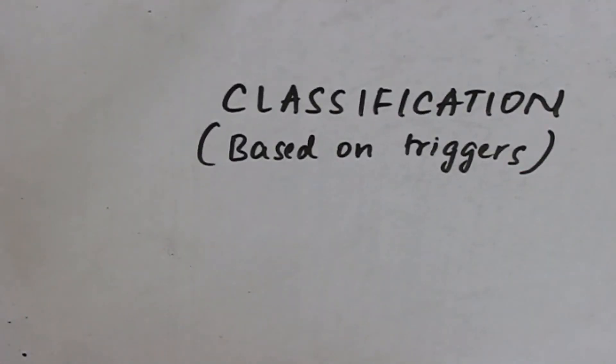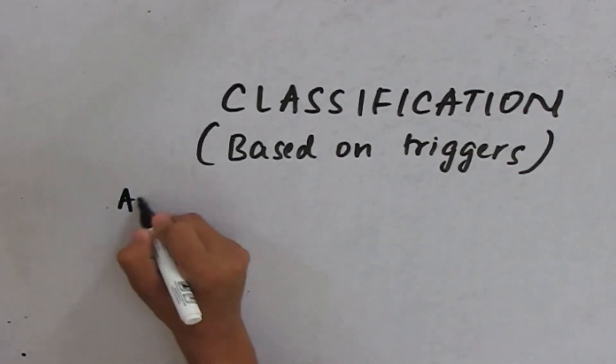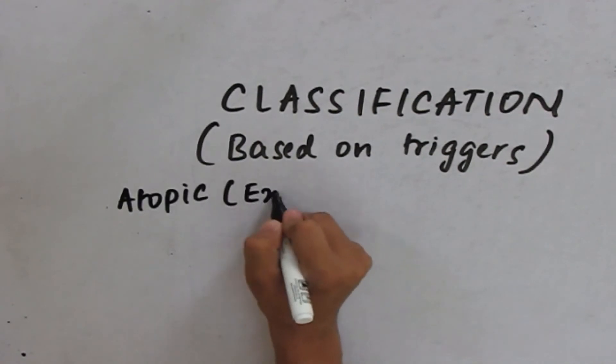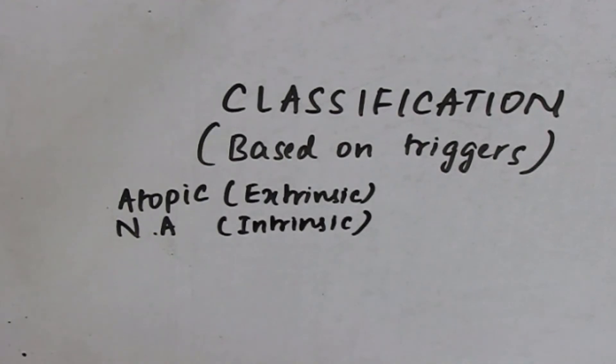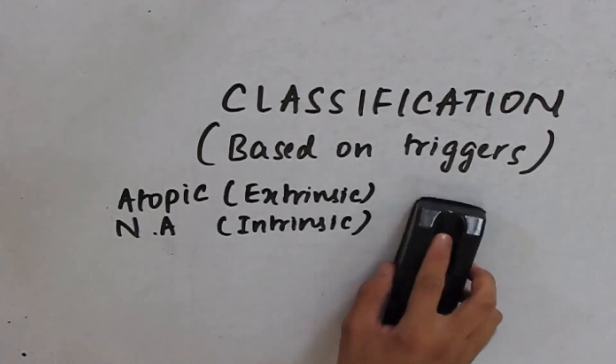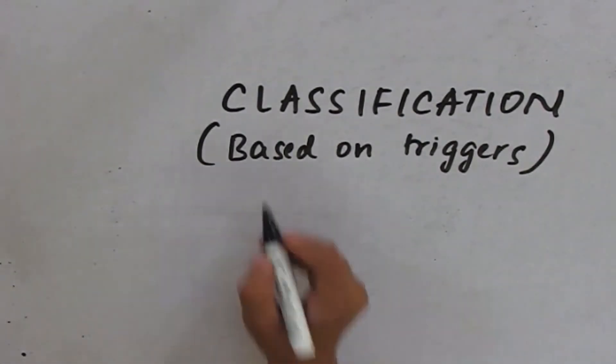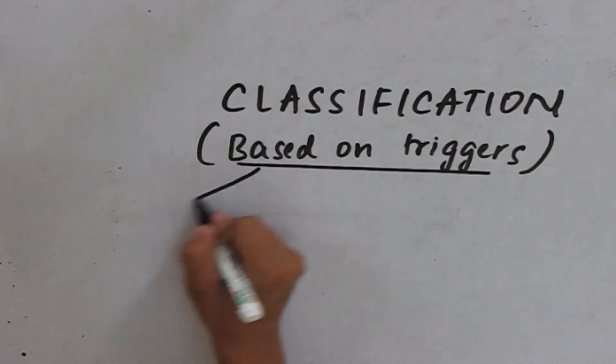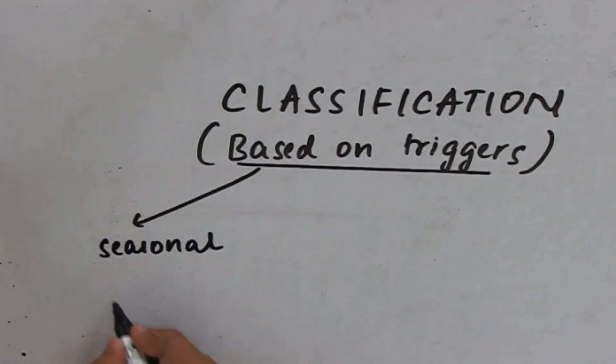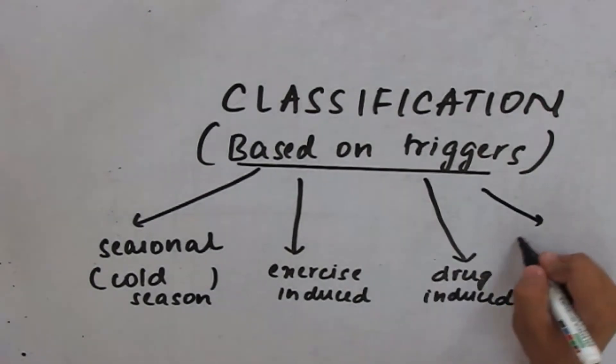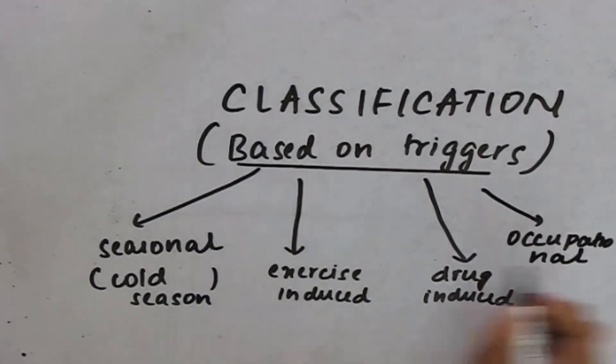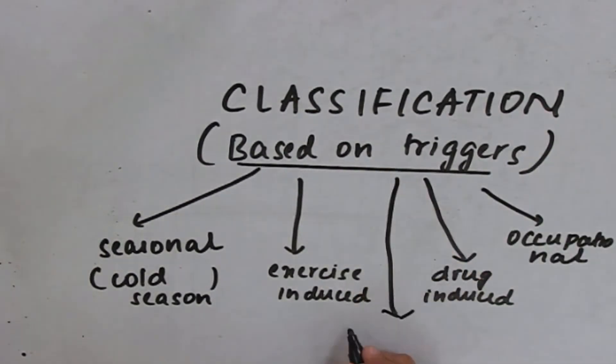Previously, we saw the classification of asthma into atopic or extrinsic and non-atopic or intrinsic. Now, let us see the classification of asthma based on the triggers which trigger it. Based on the triggers, asthma can be classified into seasonal asthma, exercise-induced asthma, drug-induced asthma, occupational asthma, and asthmatic bronchitis.